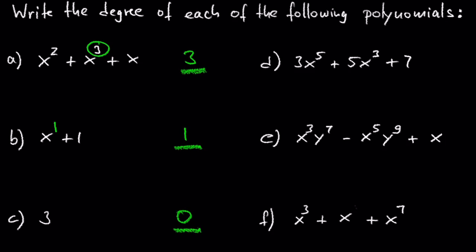Every non-zero number has a degree of 0. In D we have 3x to the 5th plus 5x to the 3rd plus 7. The first term has degree 5, the second term has degree 3, and the third term has degree 0. So the degree of the entire polynomial is 5.